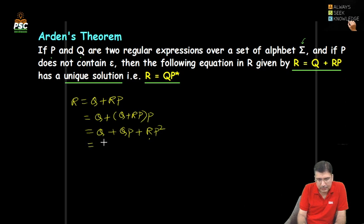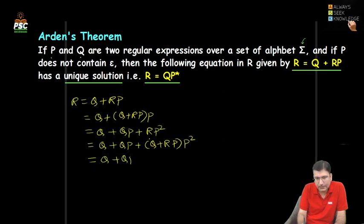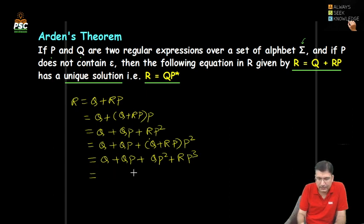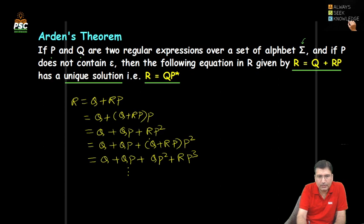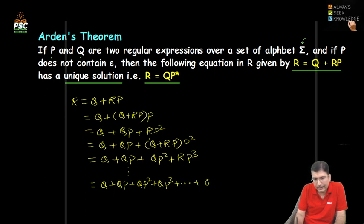If we again substitute R, we get Q + QP + (Q + RP)P², giving Q + QP + QP² + RP³. Doing this again gives Q + QP + QP² + QP³ + RP⁴. Continuing this pattern with dot dot dot, we eventually get Q + QP + QP² + QP³ + ... + QP^N + R · P^(N+1).